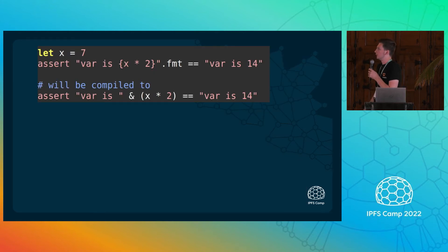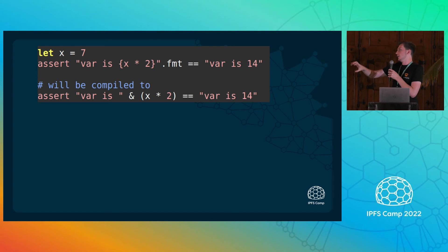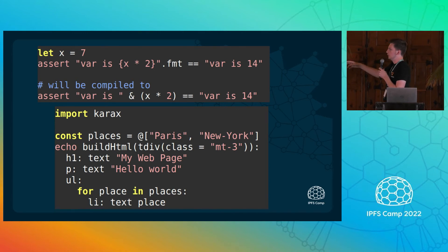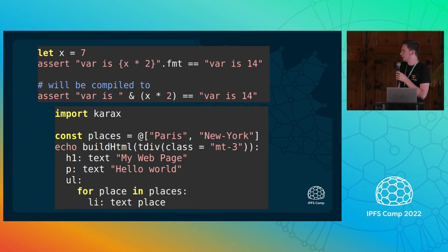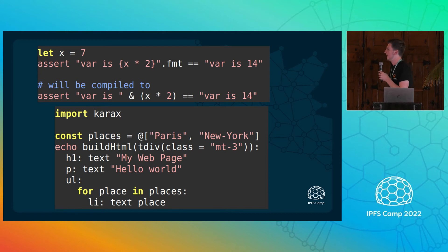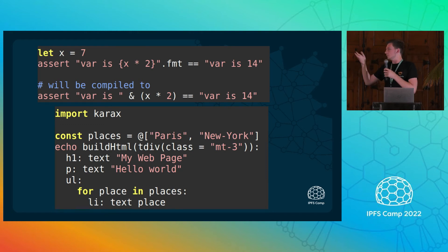Here's another example of a macro that's part of the standard library — it's called fmt. You can see it's going to take a string as a parameter, extract every code from the curly braces, and put it out of the string. Again, a nice syntax feature you can create as a library. Another example is Karax, which is a Nim HTML library. They have a buildHTML macro to which you can give a tree that looks like HTML — divs, headers, paragraphs, etc. — and it transforms that into actual Nim code with nodes and everything. This is what we call domain-specific languages. It's very useful when you're building HTML inside Nim — you can just write it out as HTML instead of using templates.